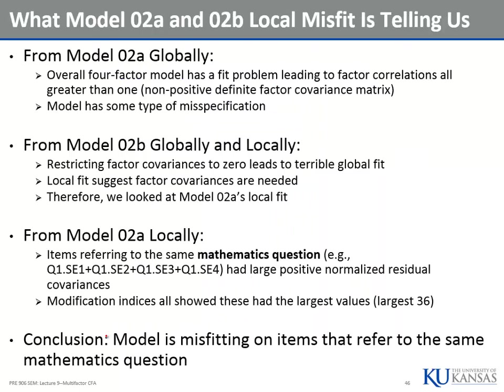Putting those two pieces of information together: Model O2A was the blown-up model that globally said it didn't work — some type of misspecification was going on. We switched to model O2B with no covariances to get it to run, and saw locally it didn't fit — we need the covariances. Going back to model 2A locally, it looks like the math question has an effect. So we've got to incorporate the effect of the question — the common stimulus for each of the four self-efficacy items.